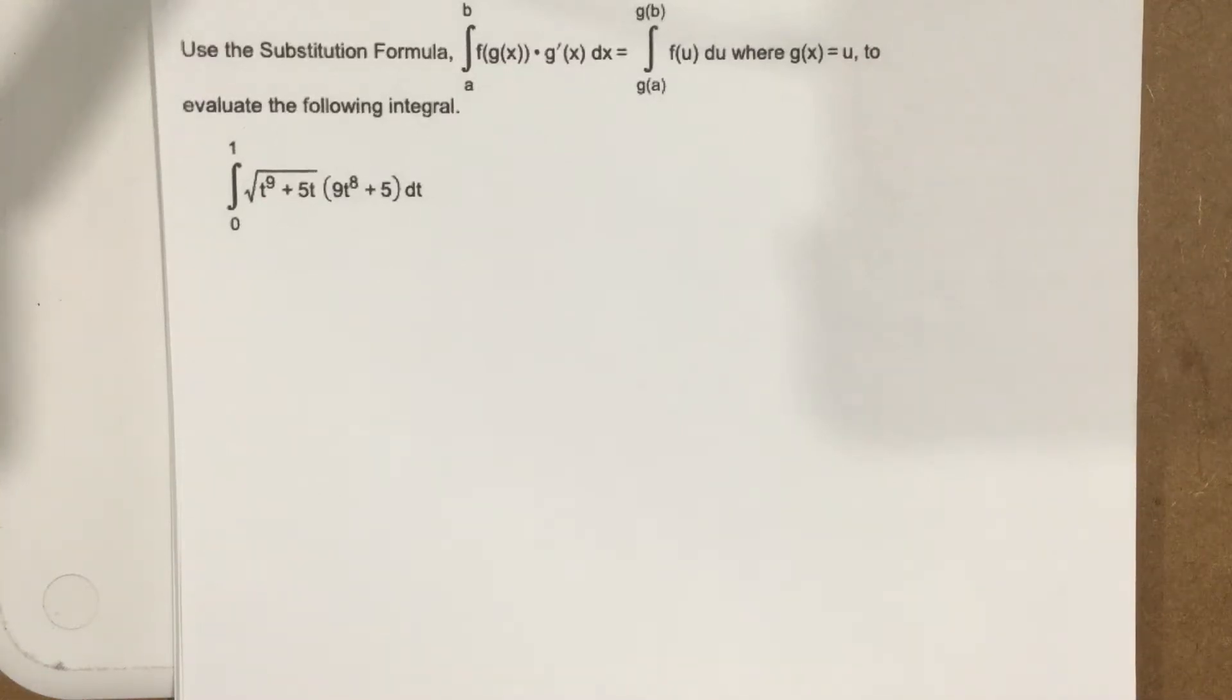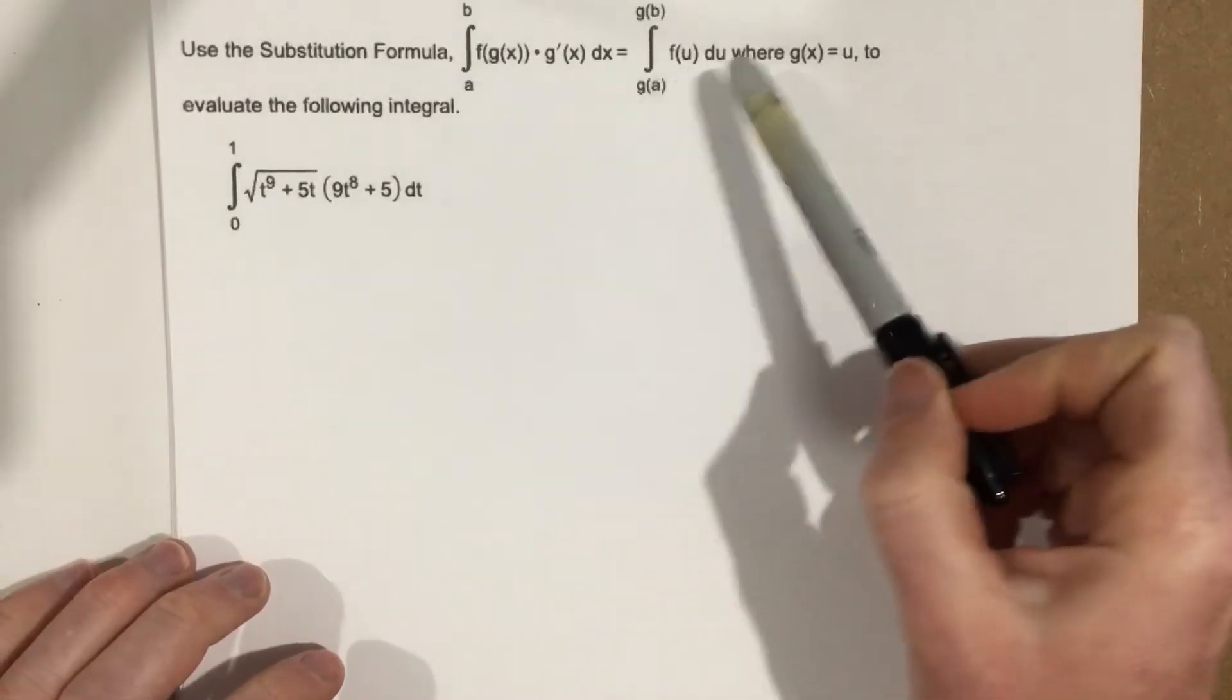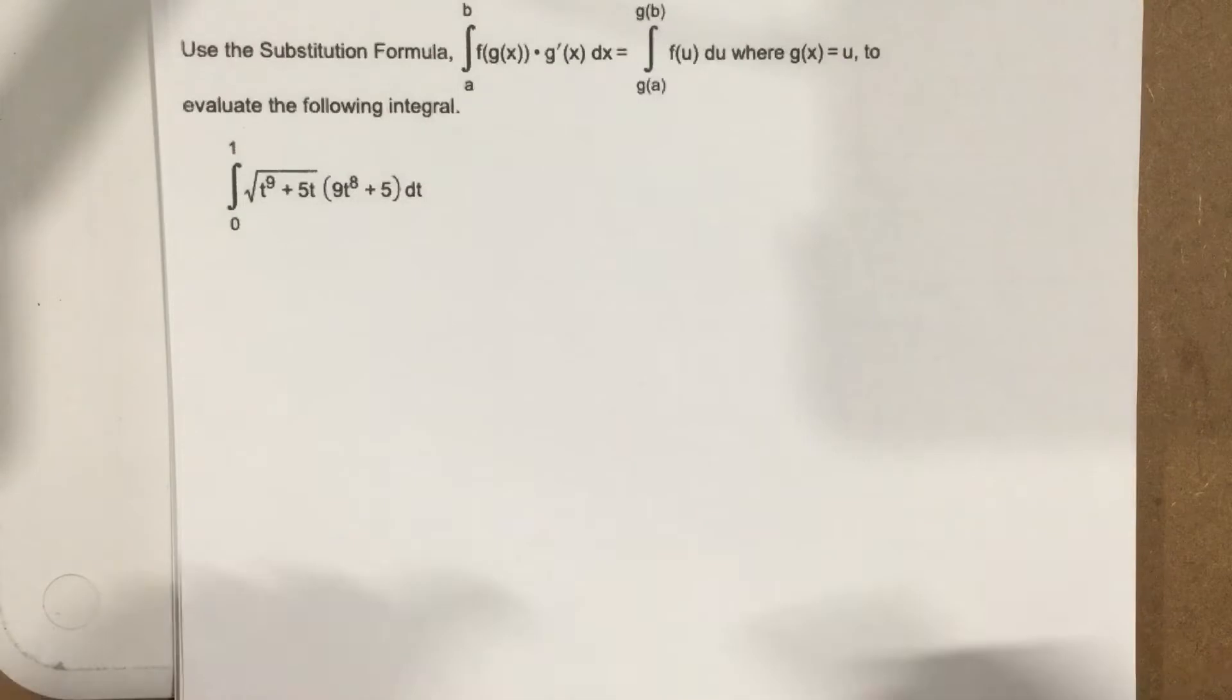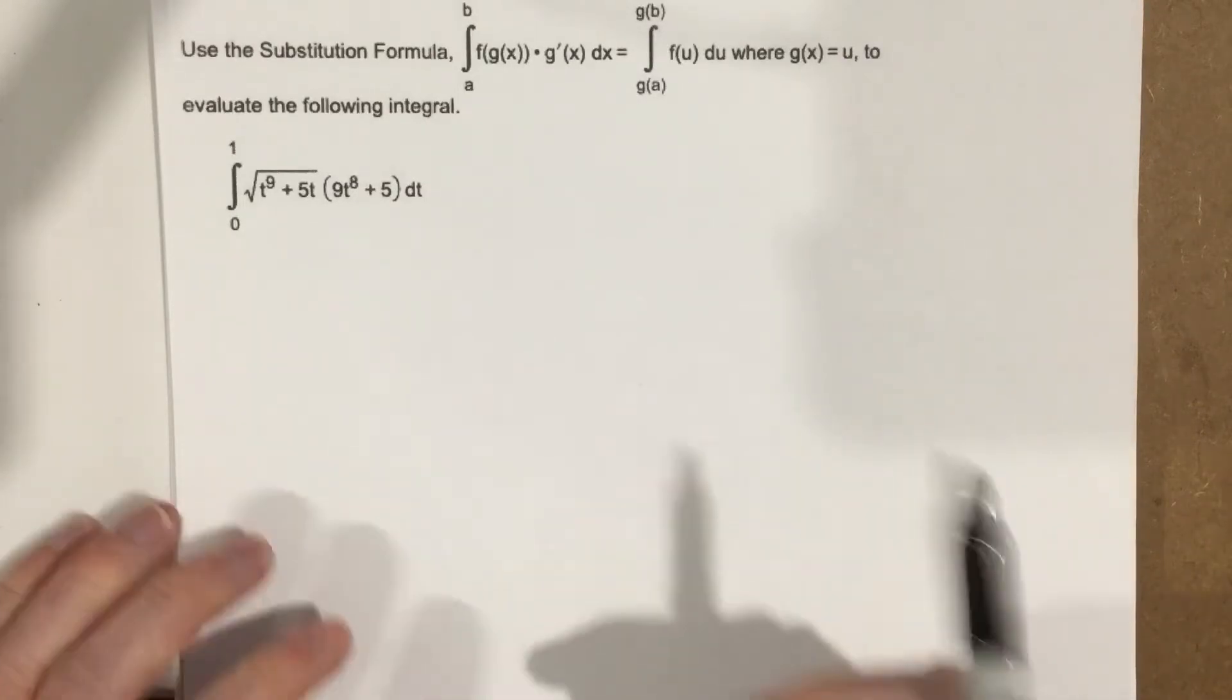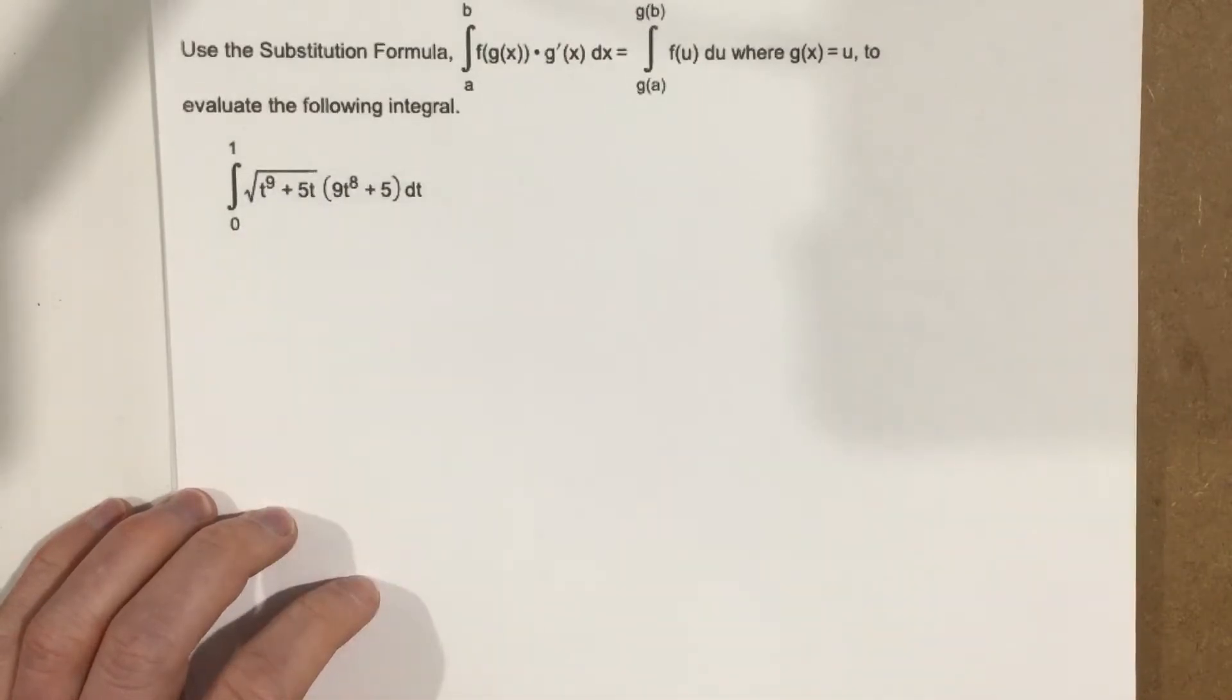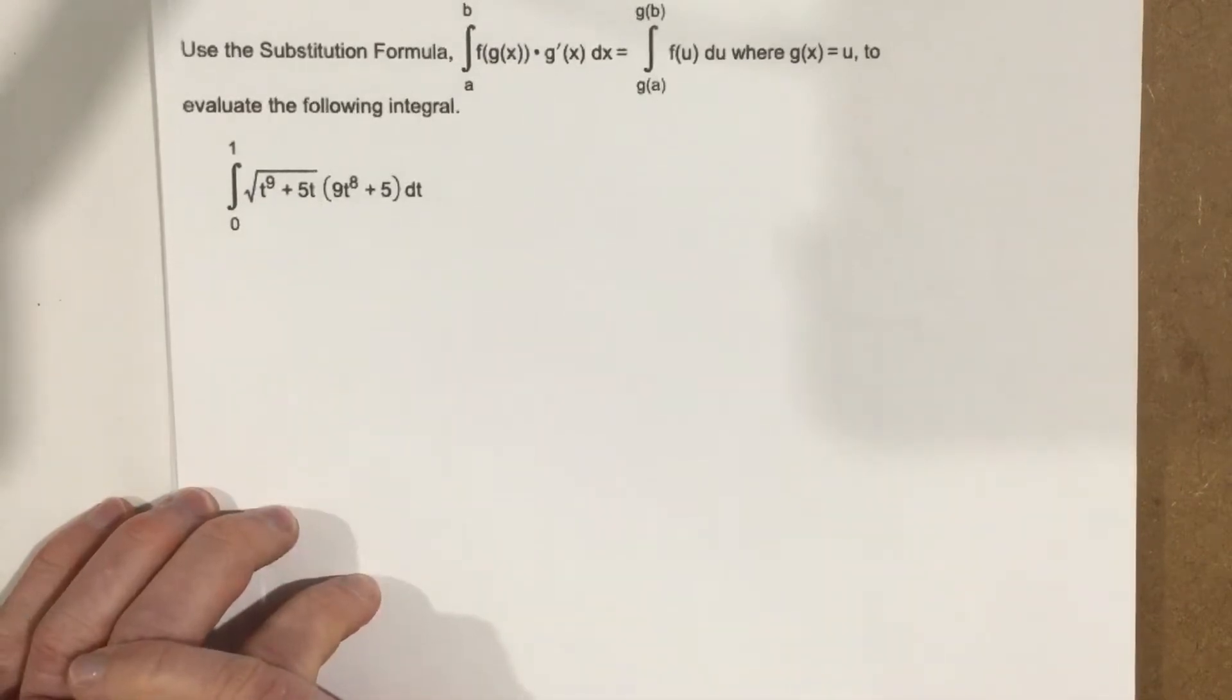This is problem number two from section 5.6. They want us to use the substitution formula given here to evaluate this integral. So essentially they want us to just substitute. Now remember I have a function here inside of a function, which is kind of the reason we need to substitute, because we don't have a way to do the integration without using this u substitution.